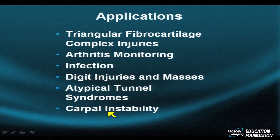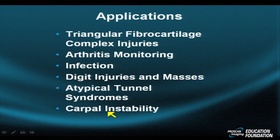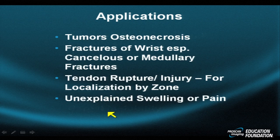For complex carpal instabilities, especially when you want to evaluate the intrinsic ligaments — the scapholunate and the lunotriquetral ligament — or for radio-ulnar instabilities, MR reigns supreme even without injection of intra-articular contrast, which is uncommonly to rarely needed when assessing the wrist and these intrinsic ligaments at the expert level.